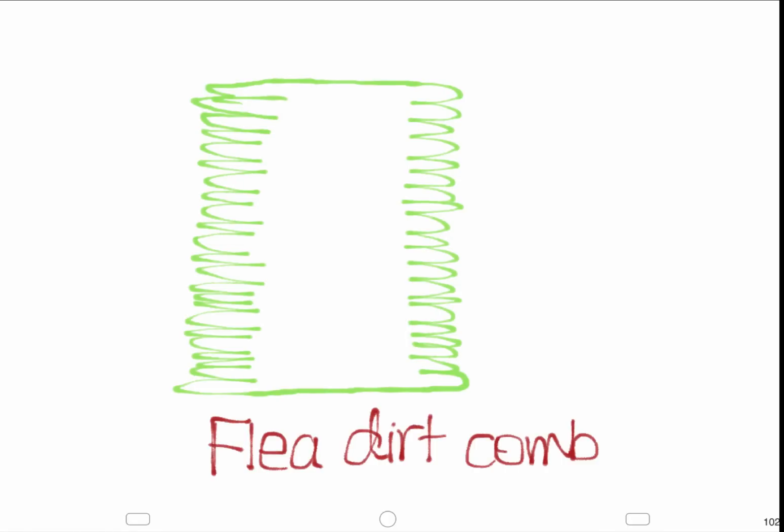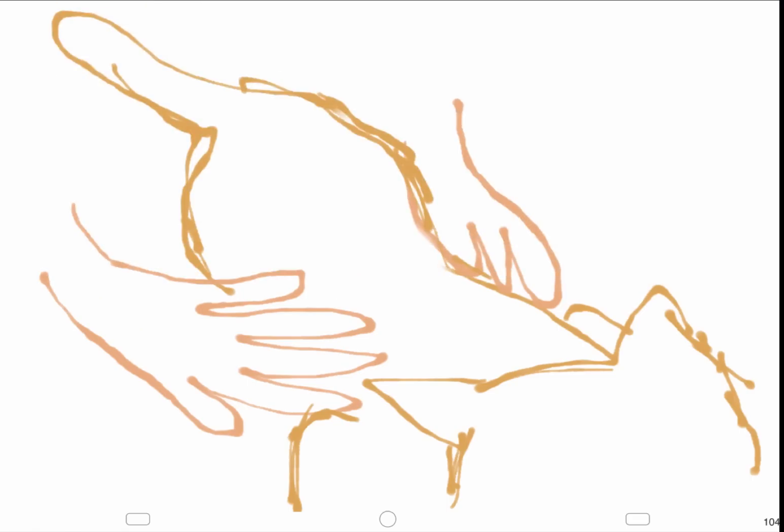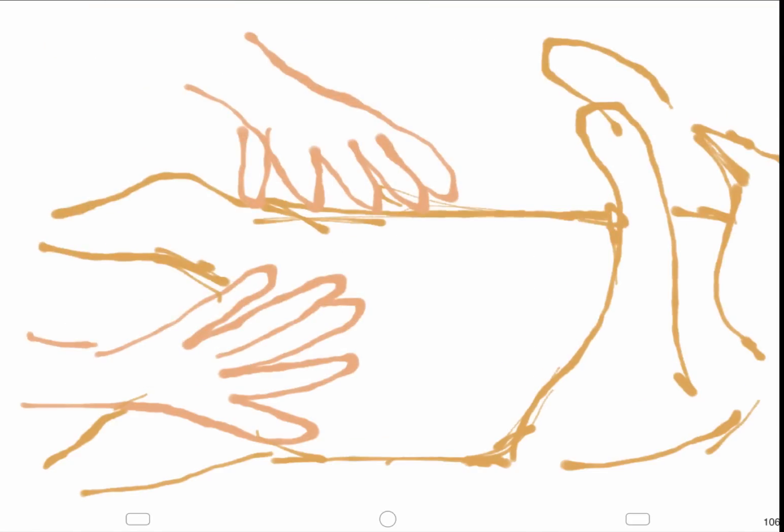A flea dirt comb can be used to comb out flea dirt and adult fleas. The contents should be removed and placed against white paper for observation. The body of the animal should also be examined for skin lesions. The chin should be observed for feline acne. The integument of the ventral abdomen should be examined for erythema, and the mammary gland should be palpated for any abnormal masses.